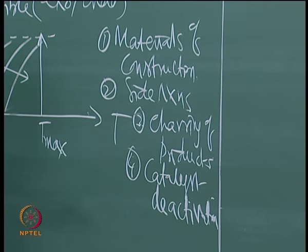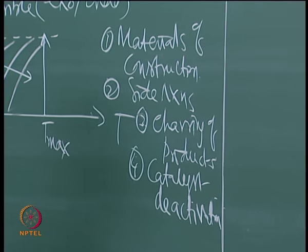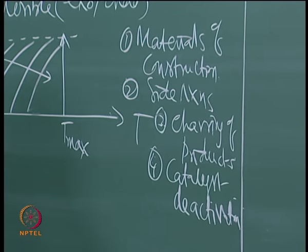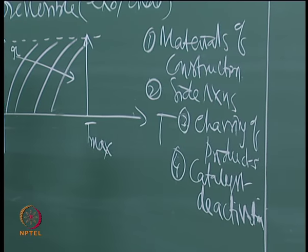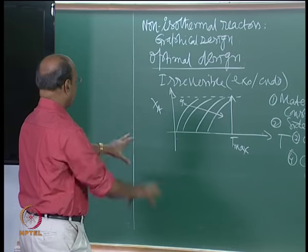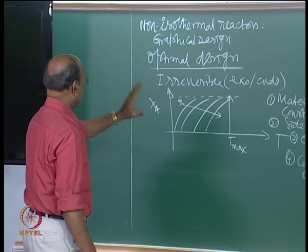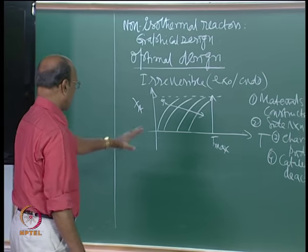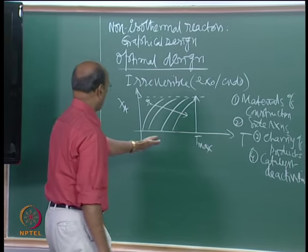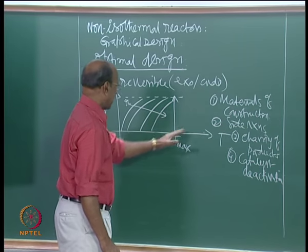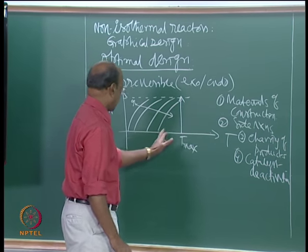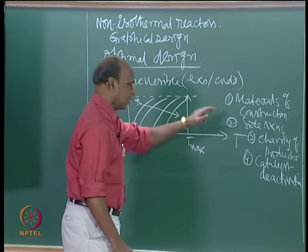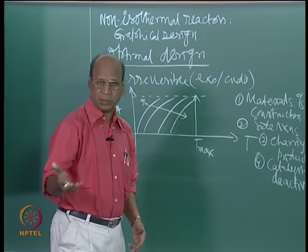This is true even for heterogeneous reactions — the same rules can be extended. But if it is a catalytic reaction, what is the fourth factor? Catalyst should withstand — most of the time the catalyst will control. The catalyst should not be thermally deactivated — catalyst deactivation. So all these things will come for the irreversible case. It is very easy now to remember that graphical design tells me I have to go for the highest temperature, because the rates are increasing as I increase the temperature.